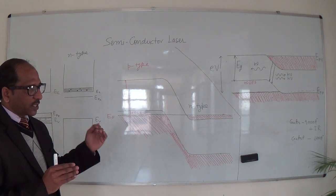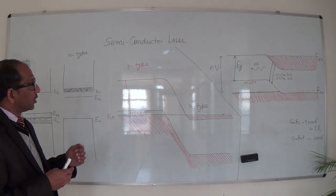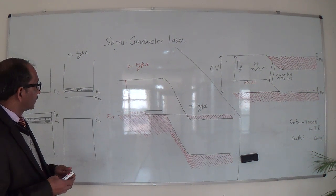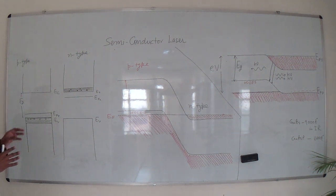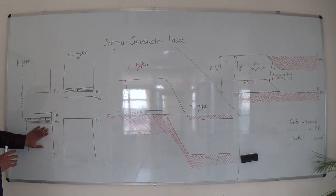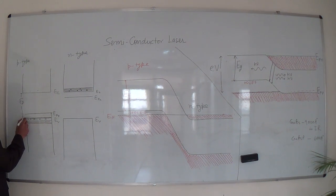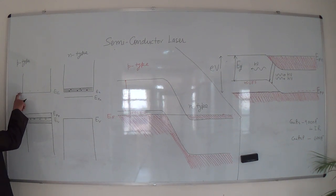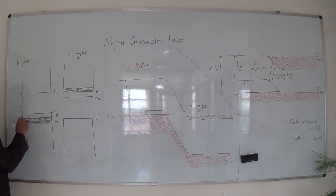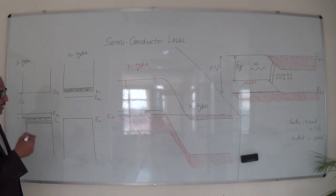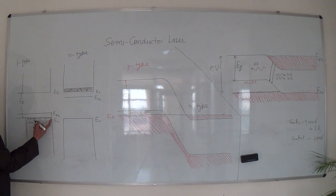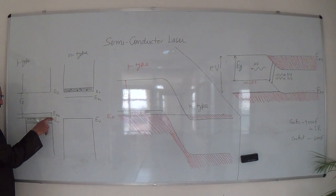For P-type semiconductor materials, we have a valence band and a conduction band. In between these two, the top of the valence band and the bottom of the conduction band define the forbidden gap, which is known as the energy gap of the semiconductor material. This line represents the Fermi energy level in P-type semiconductor, which lies very close to the valence band — just above the valence band.